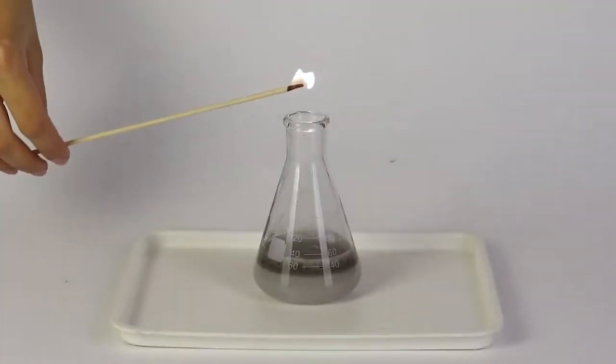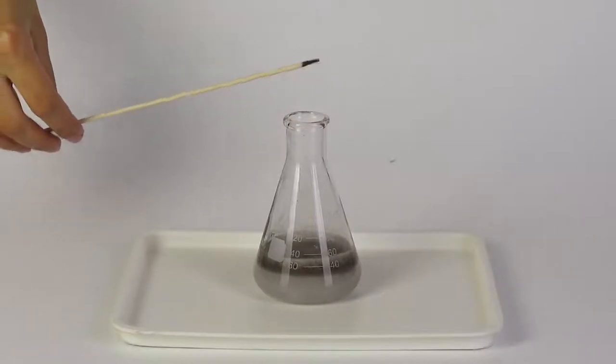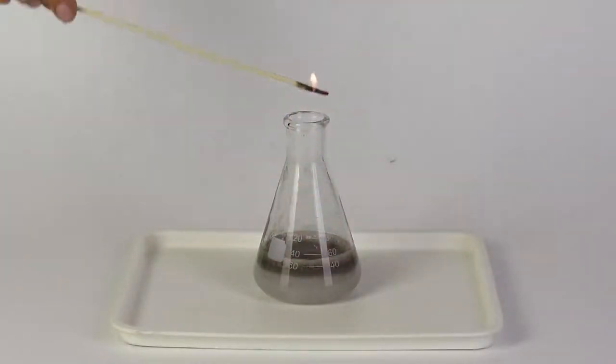Now insert the smoldering splint into the flask. Be careful not to touch the walls nor the solution.